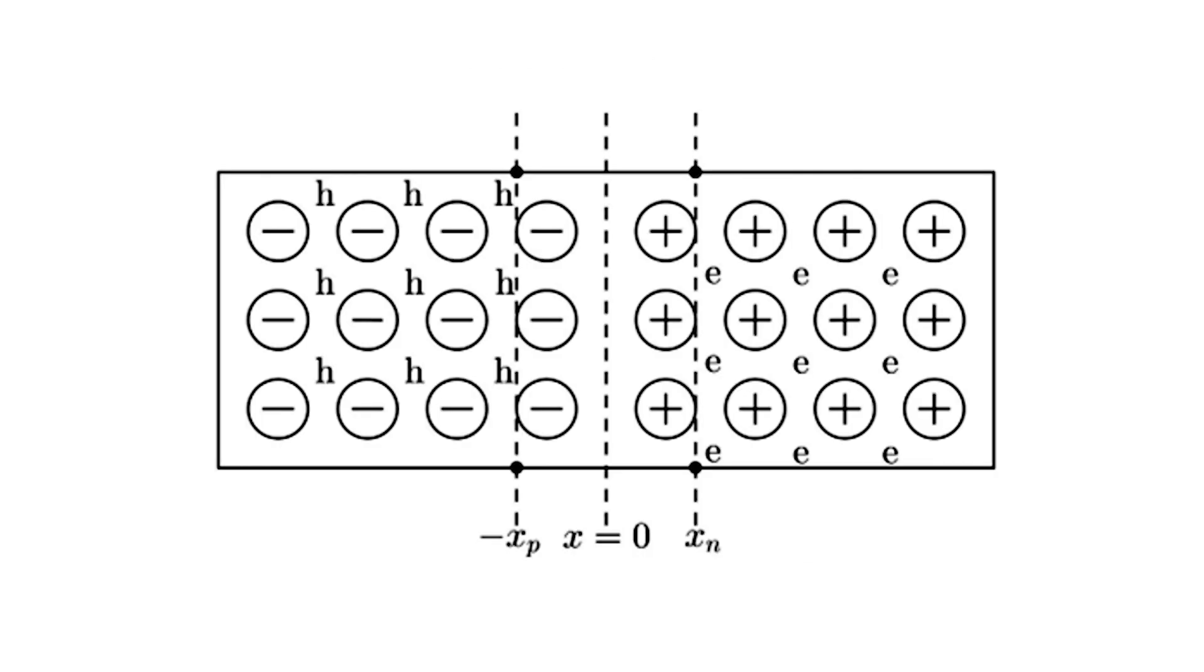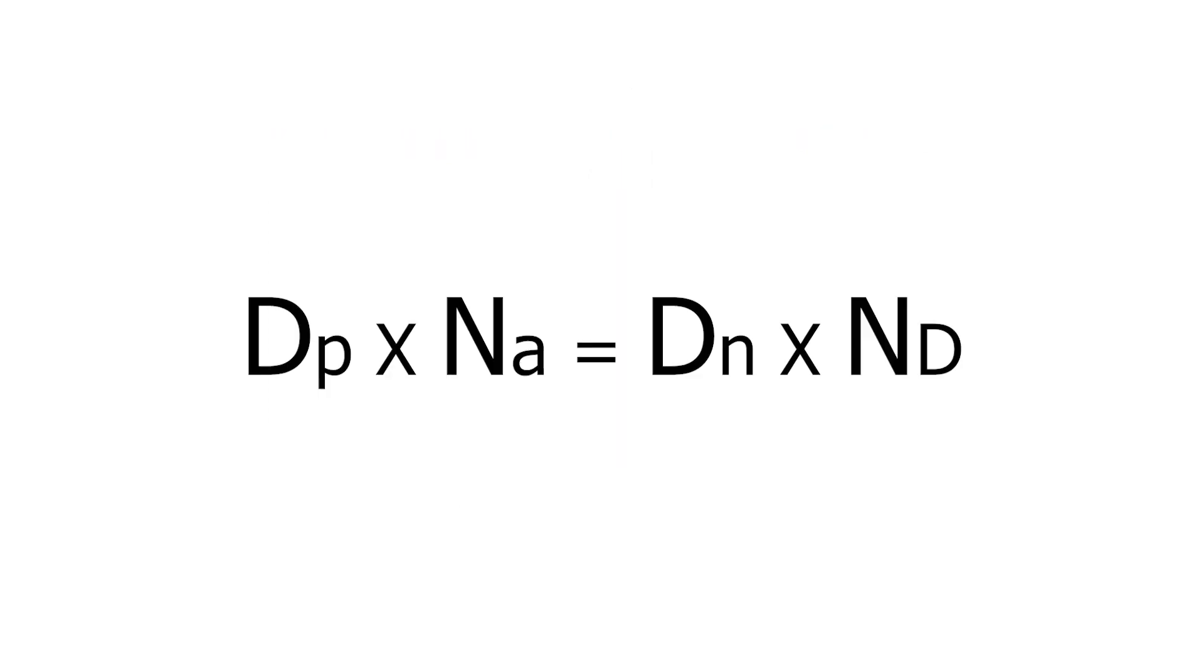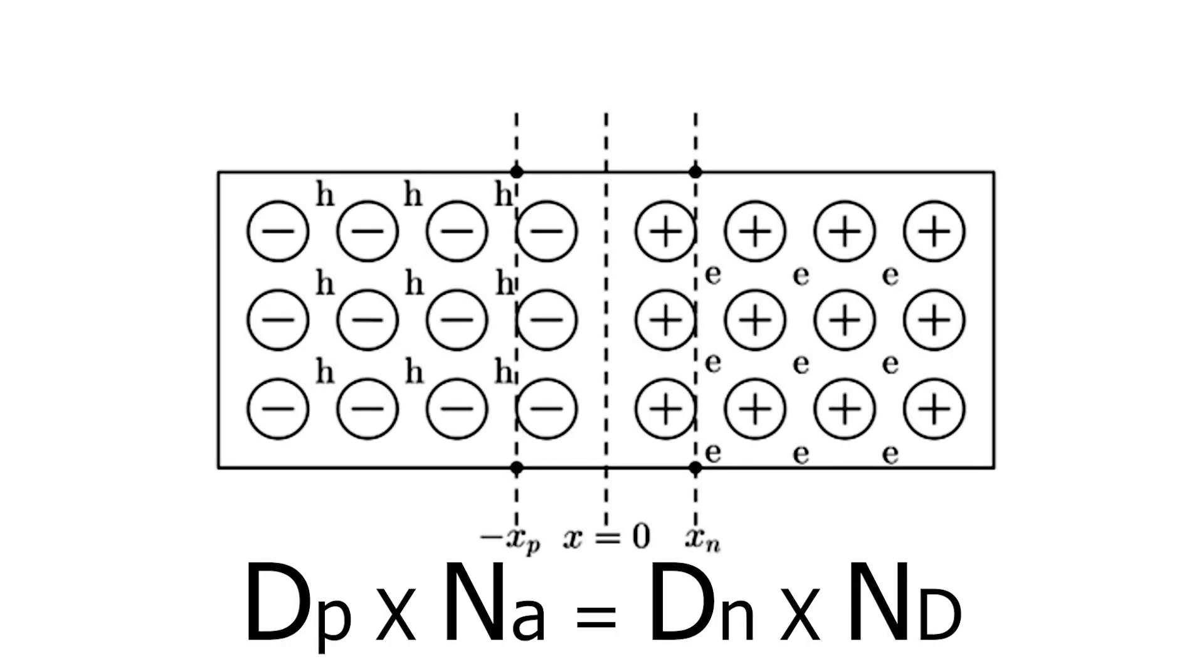The total charge on each side of a p-n junction must be equal and opposite to maintain a neutral charge condition around the junction. If the depletion layer region has a distance d, it must penetrate into the silicon by a distance dp for the positive side and dn for the negative side, giving a relationship of dp times Na equals dn times ND to maintain charge neutrality, also called equilibrium.